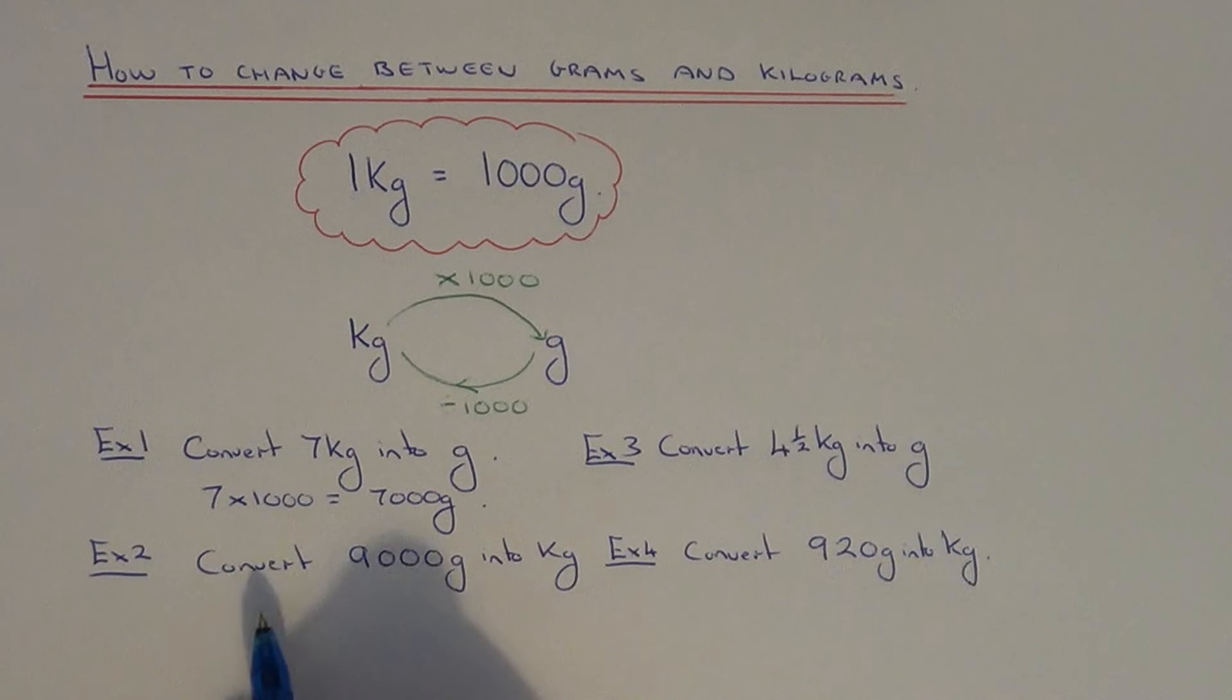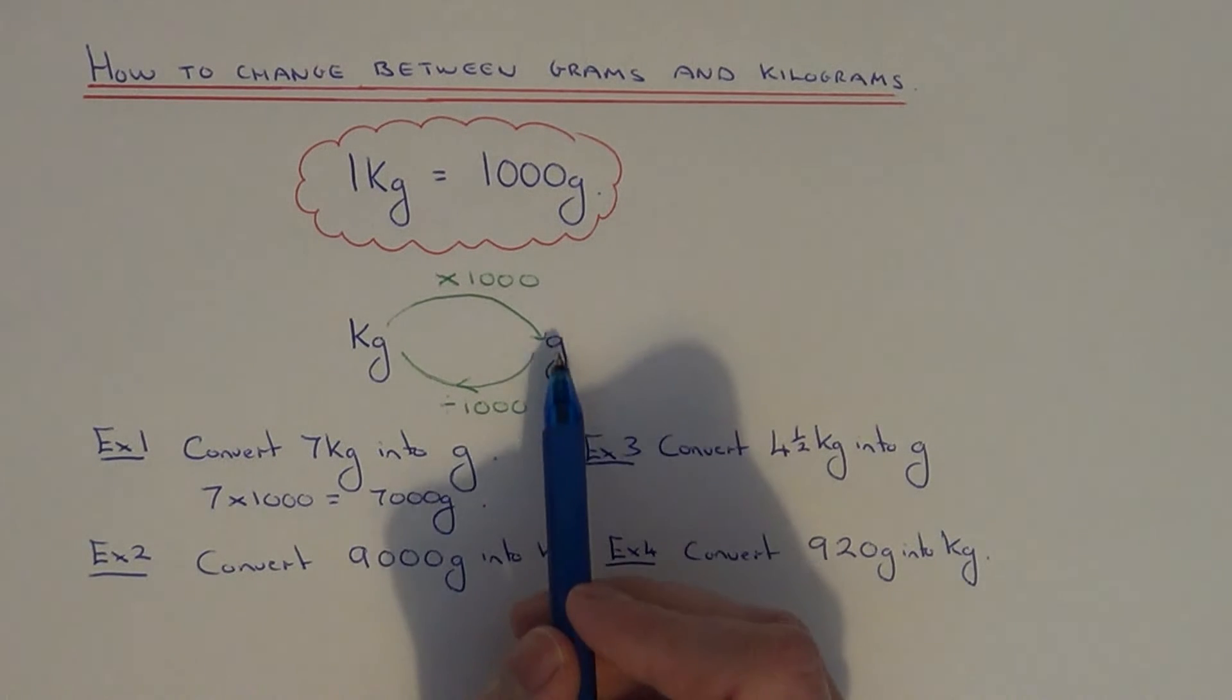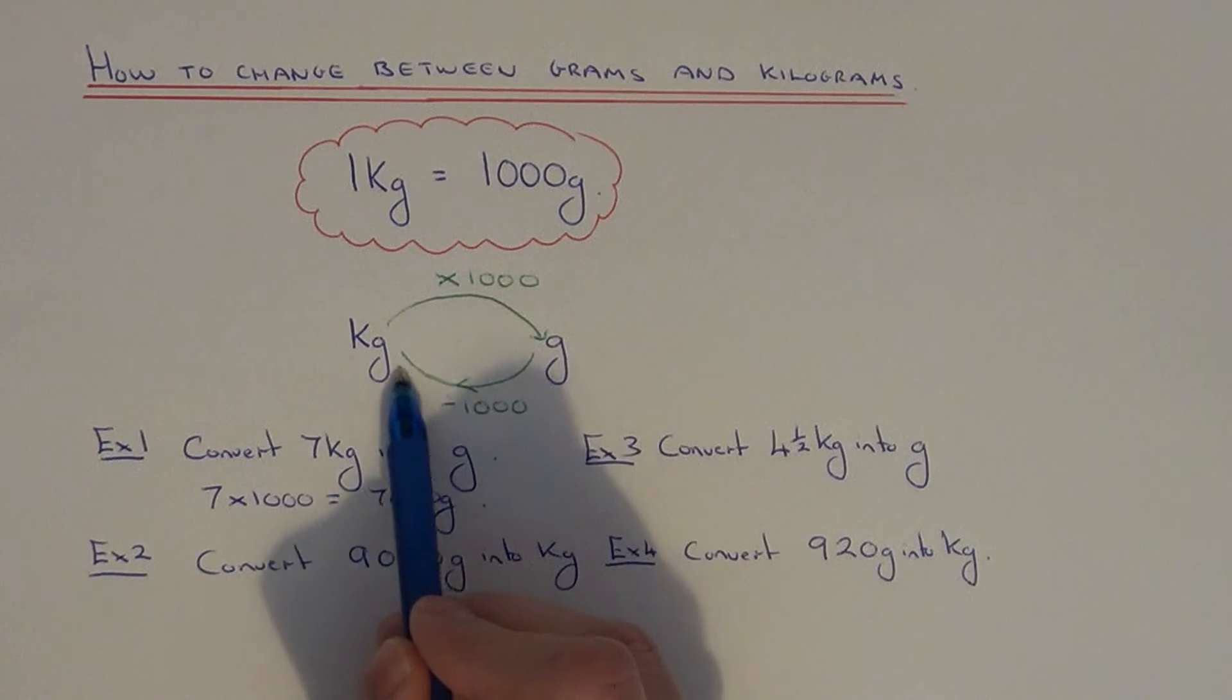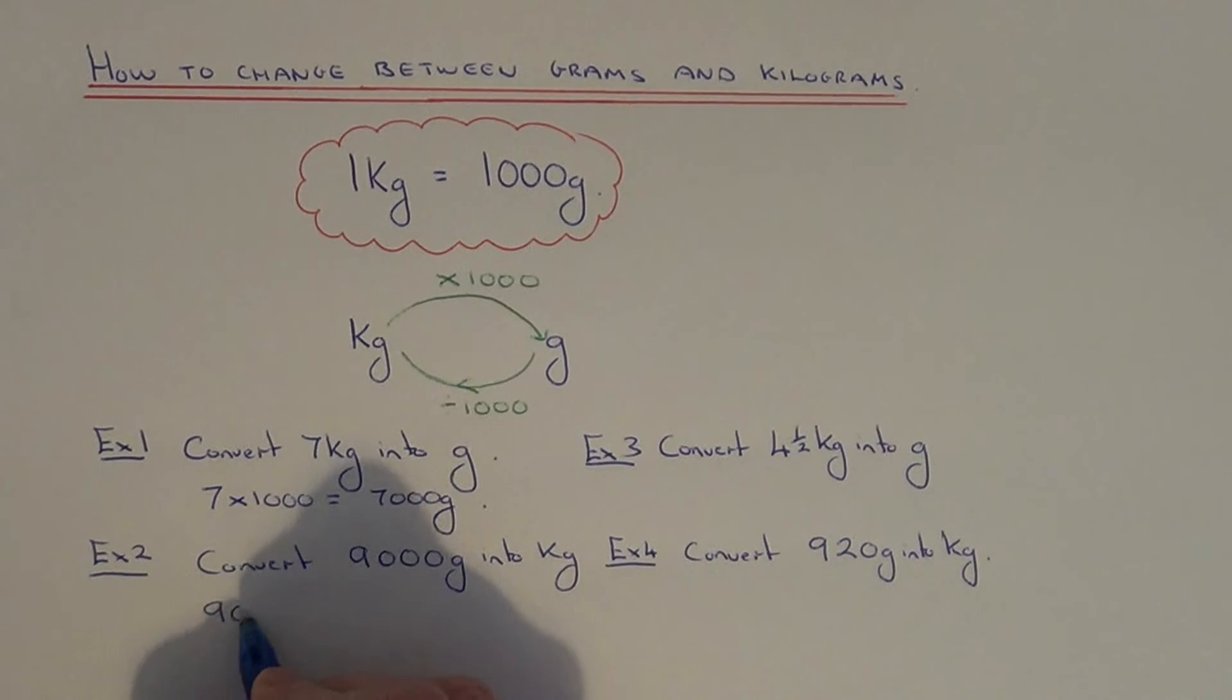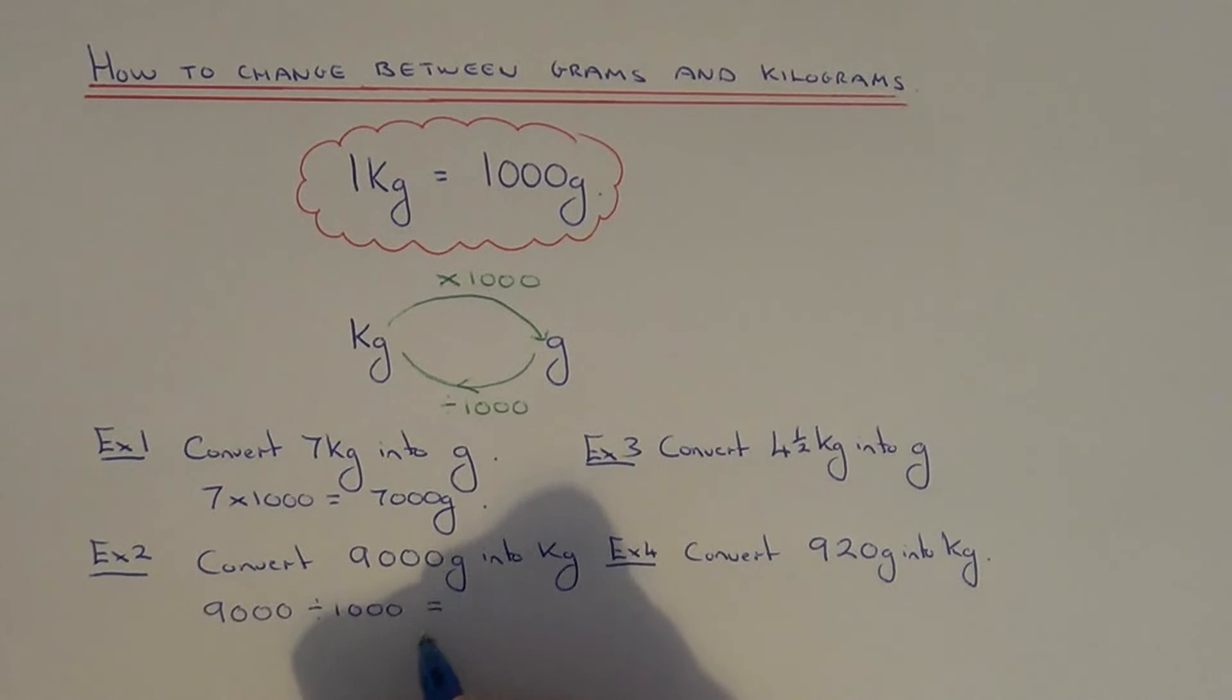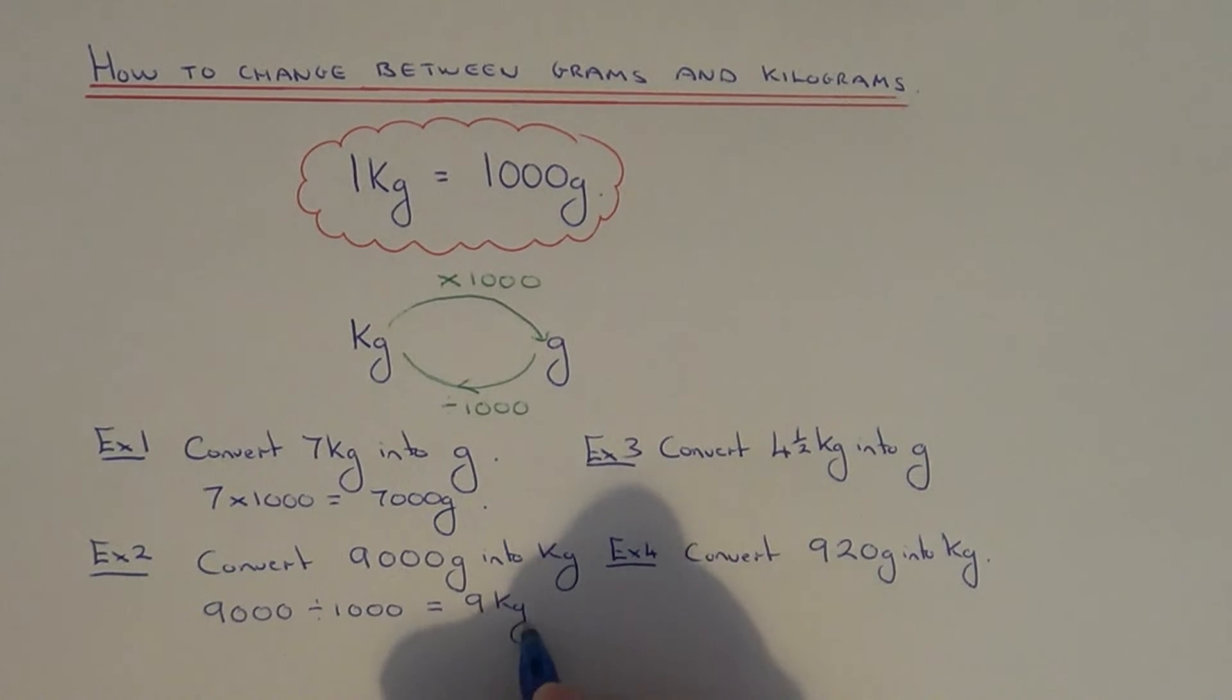Let's do example two. This time we need to convert nine thousand grams into kilograms. So we're changing grams back into kilograms, so our number will be smaller. We need to divide by a thousand. So if we do nine thousand divided by a thousand, that will give us nine kilograms.